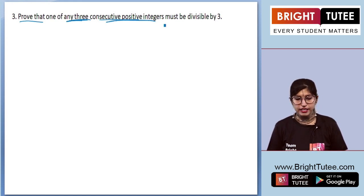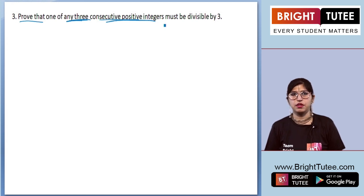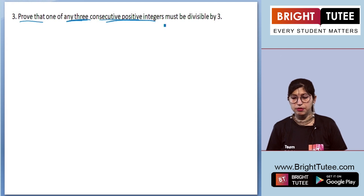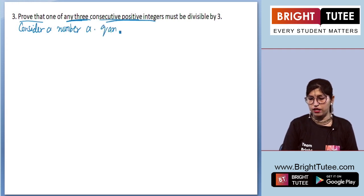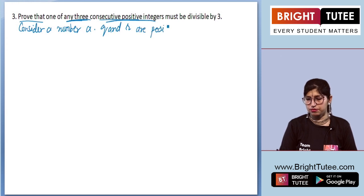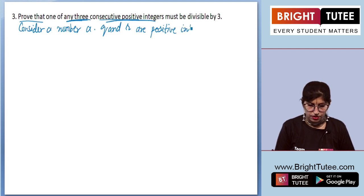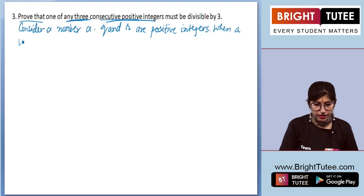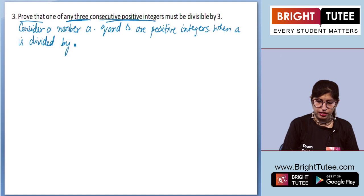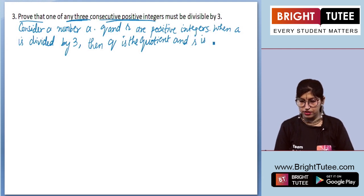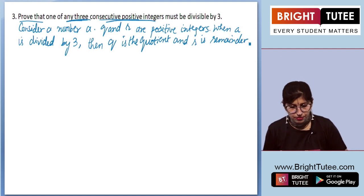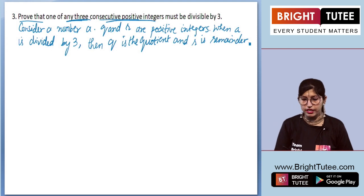We need to prove that one of any three consecutive positive integers must be divisible by three. We can consider a number 'a' where q and r are positive integers. When 'a' is divided by three, q is the quotient and r is the remainder.